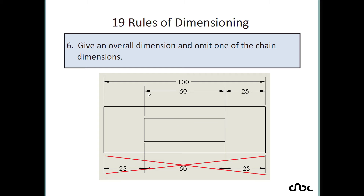Rule number 6: give the overall dimension and omit one of the chain dimensions. Whenever you create a drawing with chain dimensions, always place one dimension for the overall size and leave out one dimension from the chain. For example, if you have chain dimensions, you can leave out either one of the 25s or the 50 and place the overall size dimension.